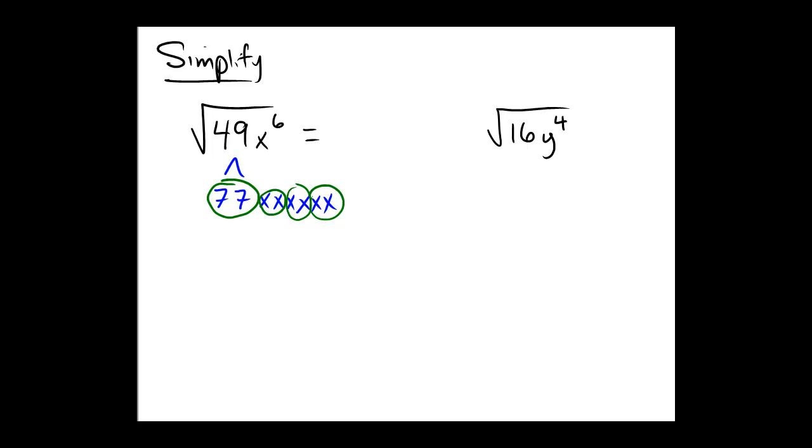So all told, the 7 escapes from prison, there's our 7 on the outside, and then 3 copies of x escape. So an x times an x times an x, which would be an x cubed. So the square root of 49x to the 6th is the quantity 7x cubed.